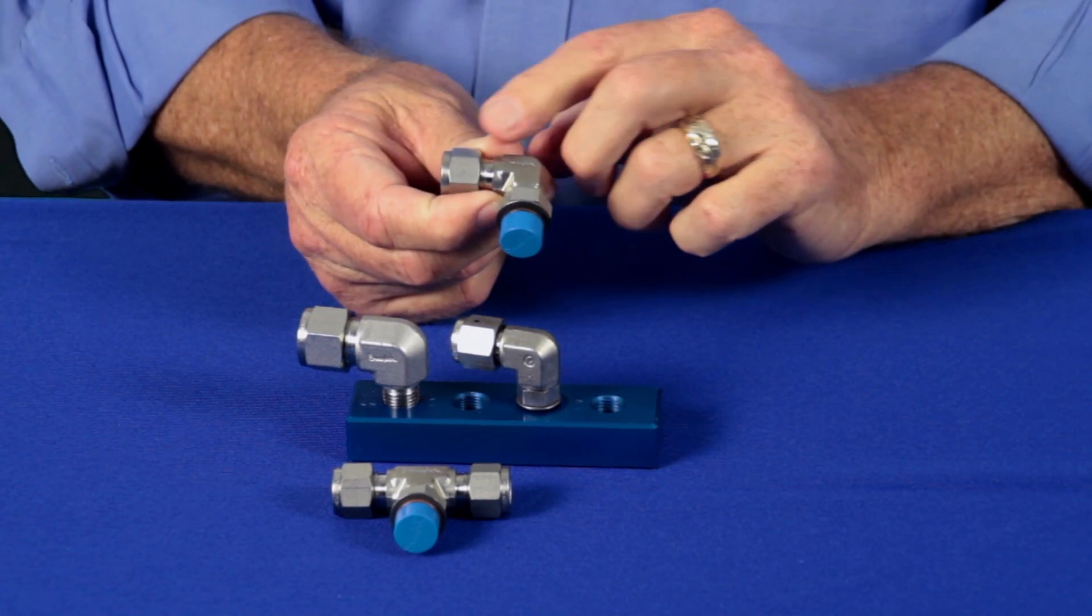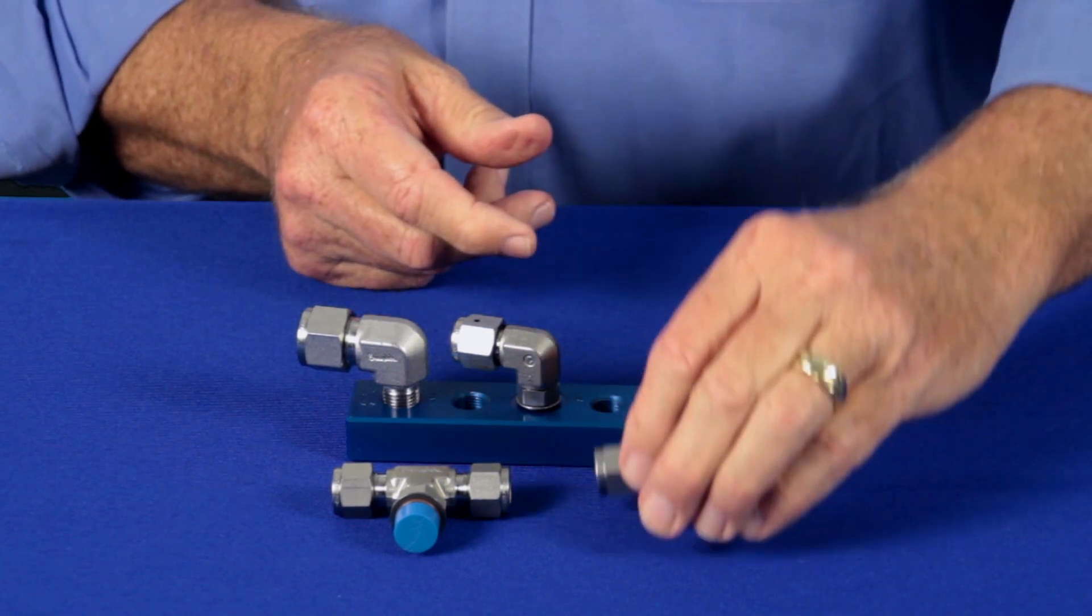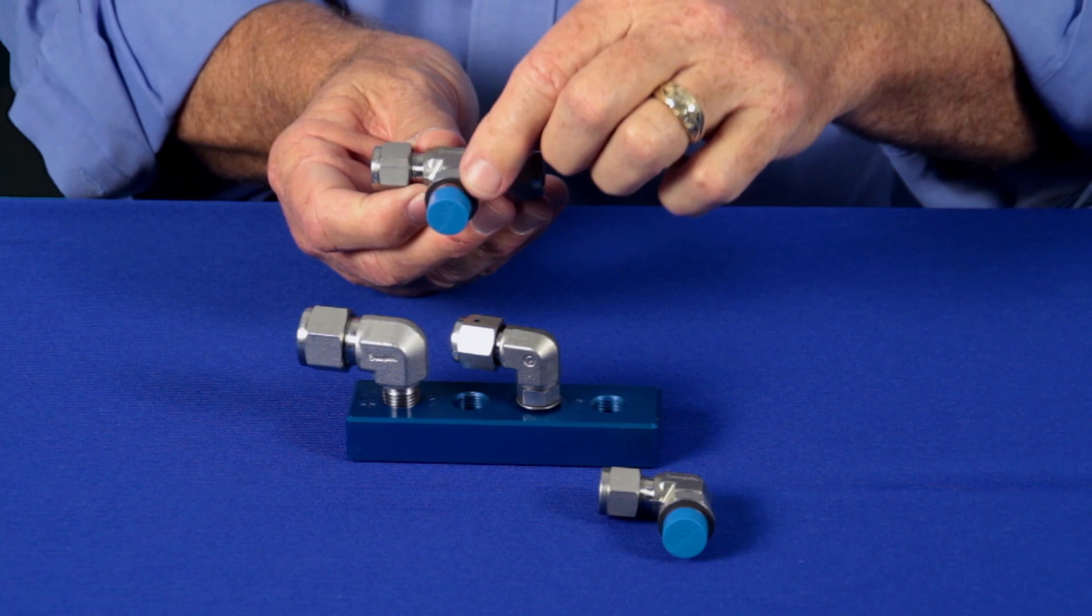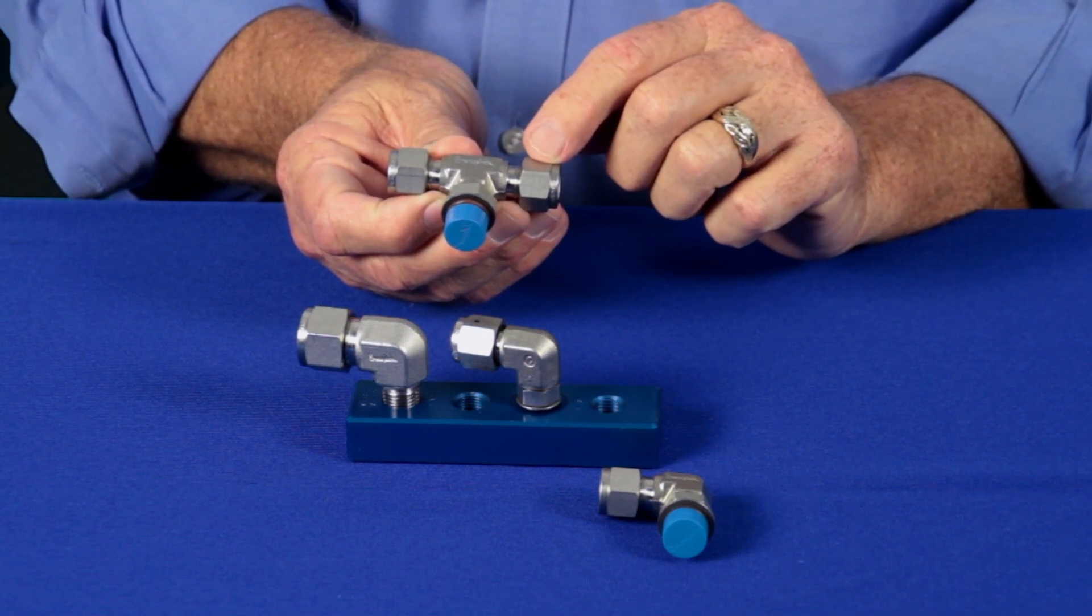Positionable elbows come in a 90 degree position and a 45 degree position. Positionable tees come with the straight thread on the branch as well as the straight thread on the run.